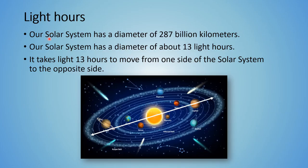As we said earlier, our solar system has a diameter of 287 billion kilometers. But it takes light 13 hours to move from one side of the solar system to the other. That is why we say our solar system has a diameter of about 13 light hours — that is how big our solar system is.